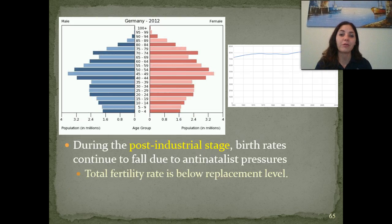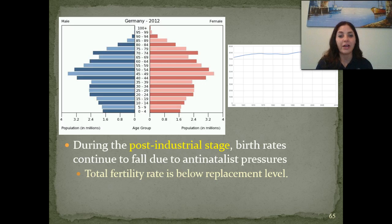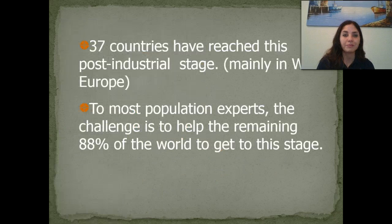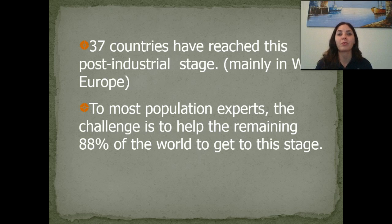Germany is an example of a post-industrial stage country. Birth rates continue to fall due to anti-natalist pressures — women wanting to go out into society and take on more dominant roles in their careers. The total fertility rate is below the replacement level, so the population will actually start to decrease. 37 countries have reached this post-industrial stage around the world, most of them in Western Europe. For most population experts, the challenge is to help the remaining 88% of the world get to this stage and stop overpopulating the Earth.